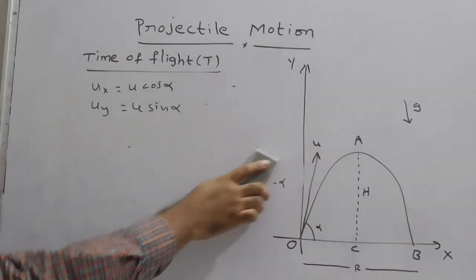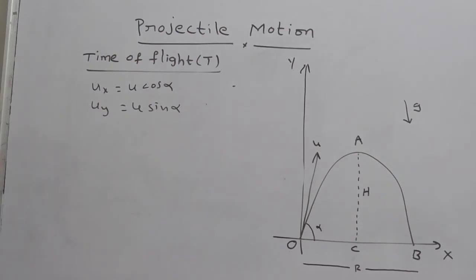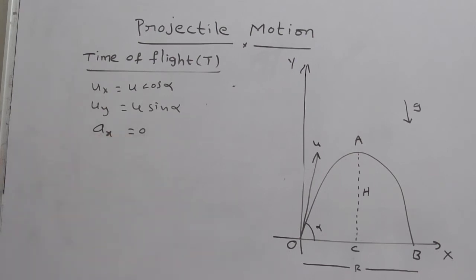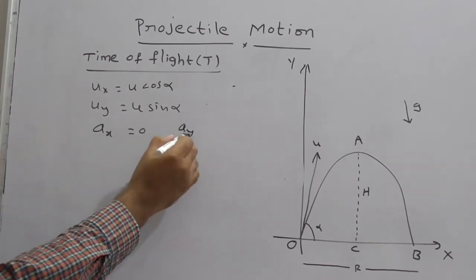Now, the next one here I am taking: ax is equal to 0. Acceleration along the horizontal line, so automatically it is 0. So what is ay? This is minus g.